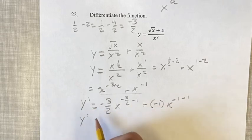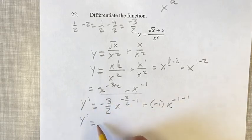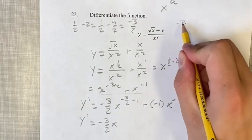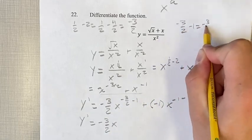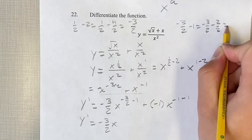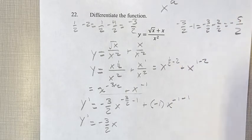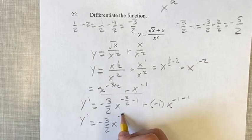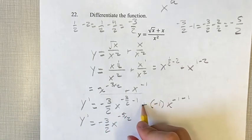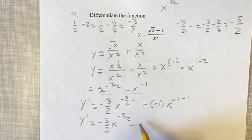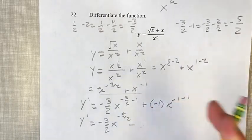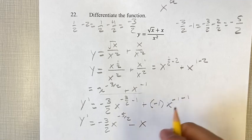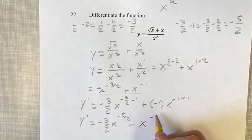Now this is something we can simplify. Negative three-halves, x to the... negative three-halves minus one. Negative three-halves minus two-halves is negative five-halves. So negative three-halves x to the negative five-halves minus... plus negative one is minus one. Times x to the negative one minus one, which is negative two.